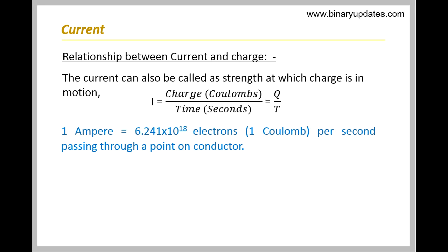More technically, 1 ampere is equal to 6.241×10^18 electrons per second, passing through a point on conductor.